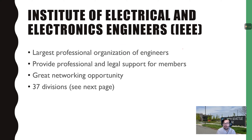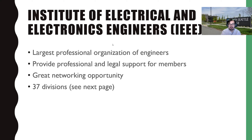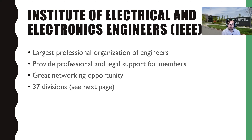Just like there's the ASCE and ASME as professional organizations for mechanical and civil engineers, there's the Institute of Electrical and Electronics Engineers — the IEEE, or I-triple-E as we often call them. This is actually the largest professional organization of engineers in the U.S. The cool thing about joining is that you get a lot of professional and legal support for your members. It's almost like a union of engineers that work together, help develop codes, and can help with professional or legal problems. It's also a great networking opportunity if you're looking for jobs.